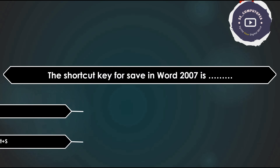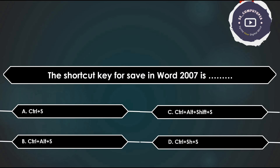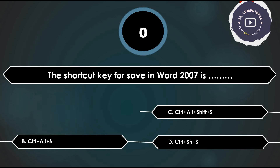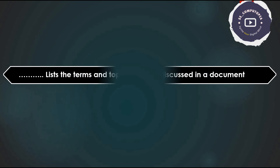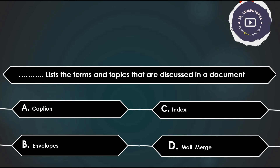The shortcut key for saving in Word 2007 is — Ctrl+S, Ctrl+Alt+S, Ctrl+Alt+Shift+S, or Ctrl+Shift+S? Answer is Ctrl+S. Next: which option lists terms and topics discussed in a document — caption, envelope, index, or mail merge?